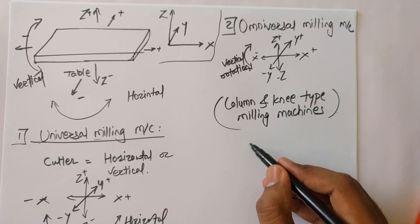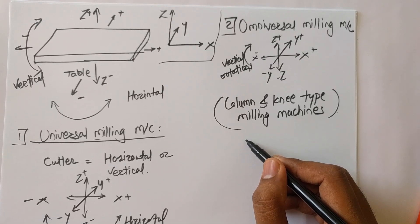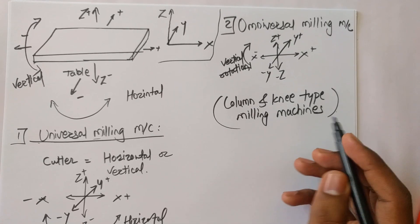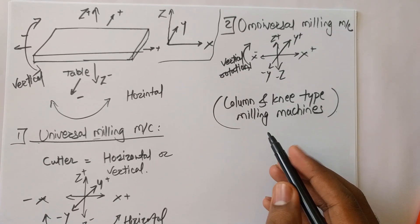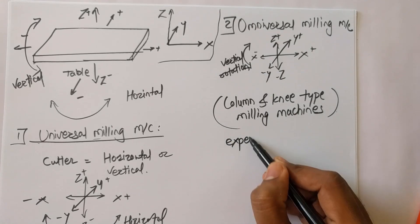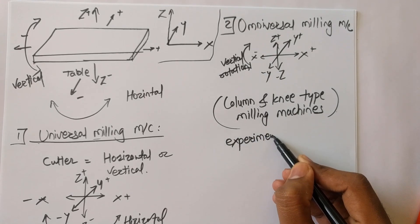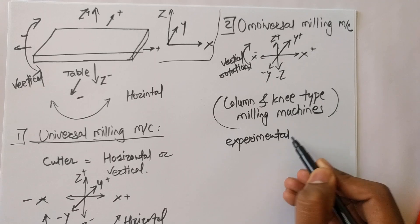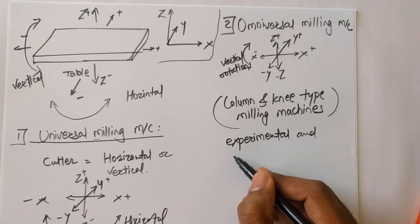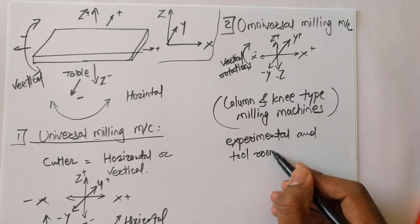The omniversal milling machine is used for limited purposes such as experimental and tool room applications, so it has limited use.